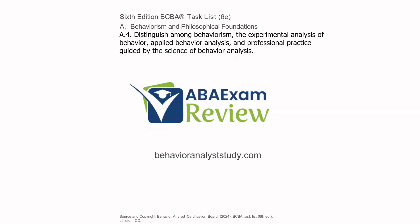Welcome back to ABA exam review and the continuation of our sixth edition BCBA task list series, where we are going through each individual task list item and breaking it down into what we believe you need to know to pass your exam. We're continuing with A-A4: distinguish among behaviorism, experimental analysis of behavior, ABA, and professional practice. Although we use ABA to broadly describe many things in our field, we do want to know the distinction between these four areas.